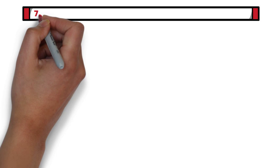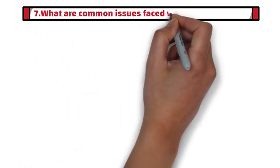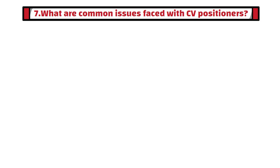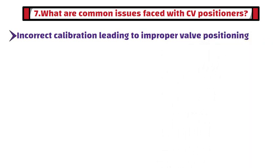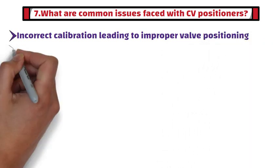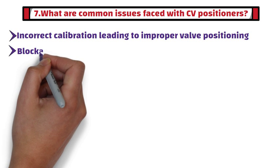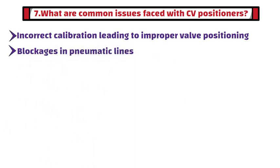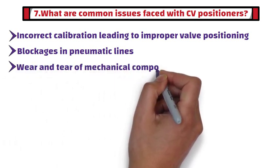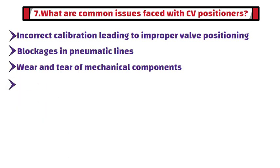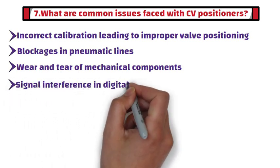Seventh question: What are common issues faced with control valve positioners? Common issues include incorrect calibration leading to improper valve positioning, blockage in pneumatic lines, wear and tear of mechanical components, and signal interference in some digital positioners.